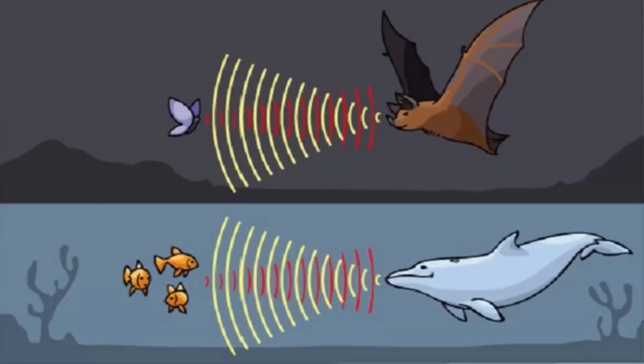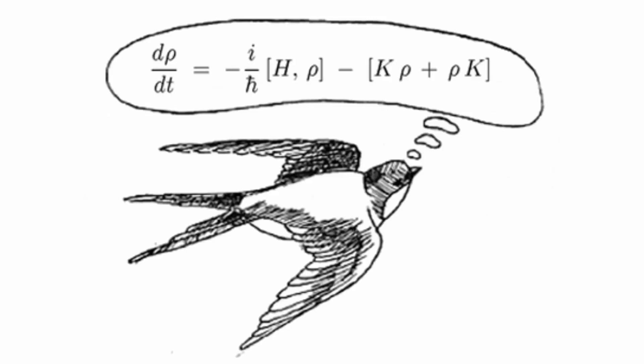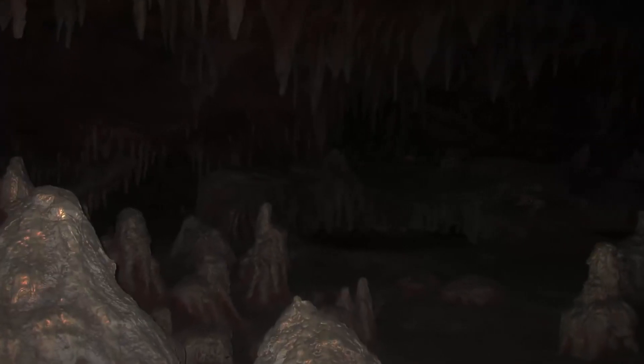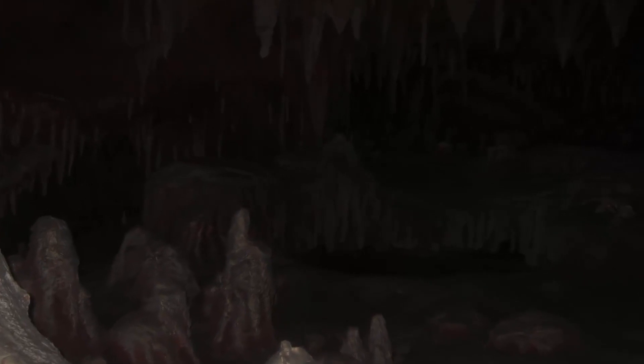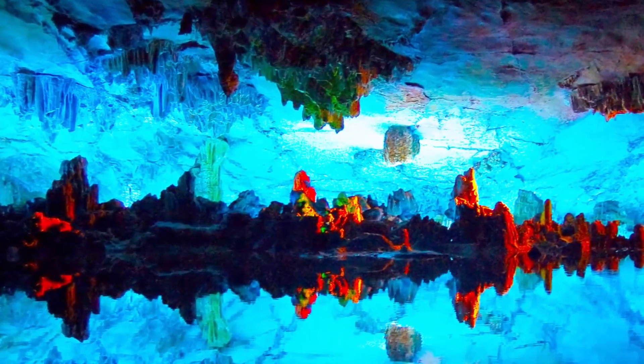Each one with its own interpretation of reality. An example of these senses could be echolocation, which allows certain animals to have a three-dimensional vision of their environment from sound — this is how dolphins see us through echolocation. There is also electroreception, which is the ability to detect electric fields, or magnetoreception, which is the sense that allows some animals to detect magnetic fields. Let's now imagine the case of bats: they can see ultraviolet light and they have echolocation. Try to feel like a bat — their interpretation of reality is very different from ours, and what for us is a dark and dangerous cave may be for them a paradise full of lights and colors that we will never be able to even imagine.